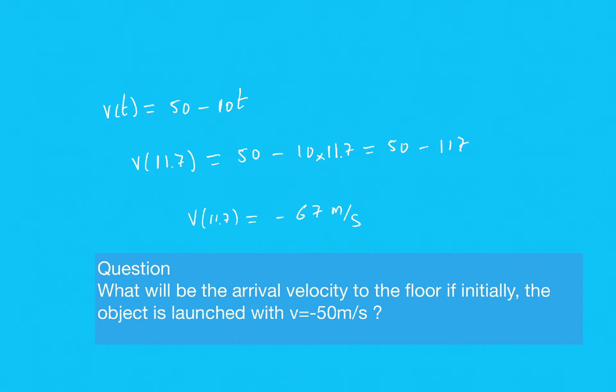As an extension, redo the problem with changed initial conditions: y₀ = 100 meters, but now the initial velocity is −50 meters per second, meaning the object is launched downward. The maximum height should be 100 meters since the object moves downward immediately. Find the velocity when it arrives at the floor and compare it with the previous case — will it be the same or different? Try to solve it.